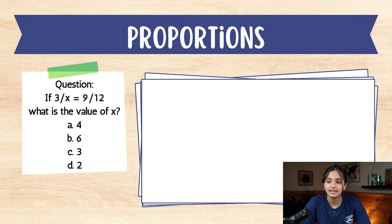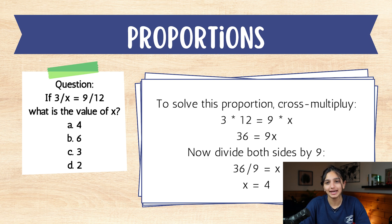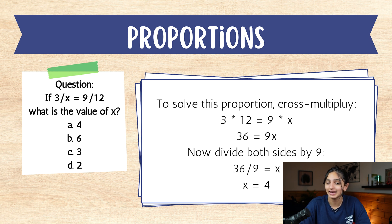Now for our second question about proportions. If 3/x = 9/12, what is the value of x? A. 4. B. 6. C. 3. D. 2. Take a minute to pause and see what you think is correct. If you said A, 4, you are correct. To solve this proportion, cross multiply: 3 times 12 = 9 times x, so 36 = 9x. Now divide both sides by 9: x = 4.